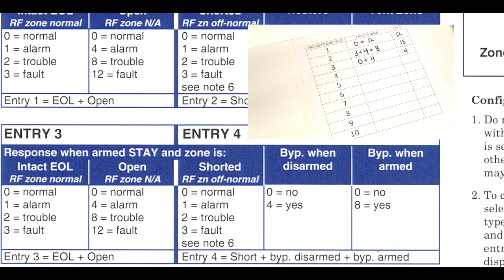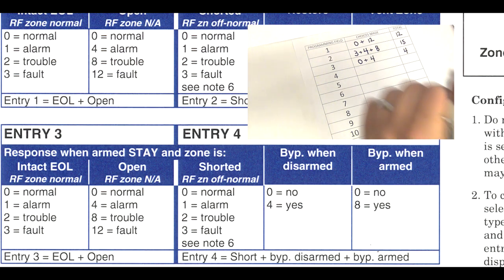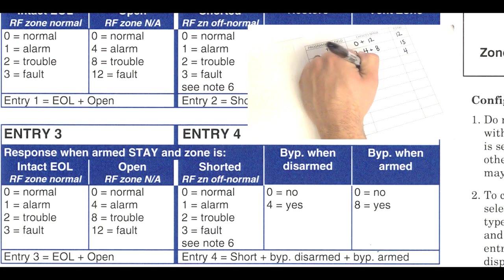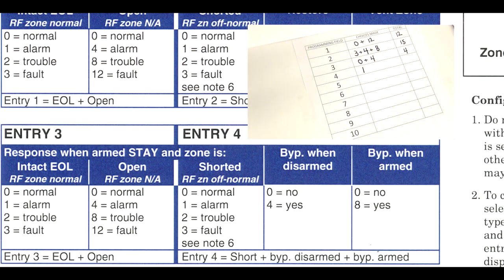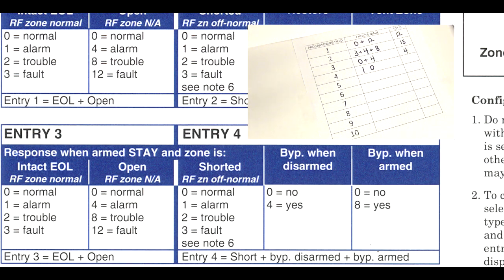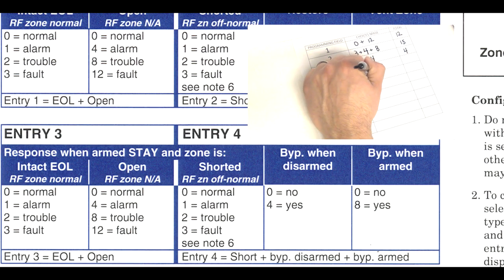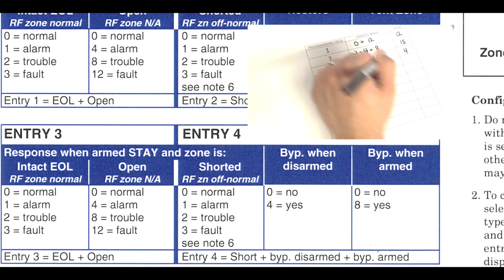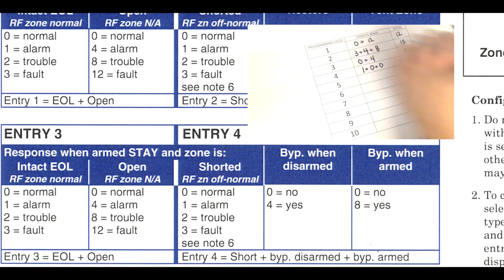Moving along to field four. Response when armed in stay and zone is shorted — that should show up as an alarm, so enter in a one. Bypass this zone when system is disarmed — we do not want that, so enter in a zero. Bypass this zone when armed — we also do not want that, so enter in a zero. One plus zero plus zero gives us a total of one for programming field four.